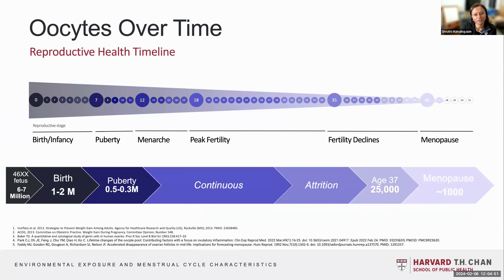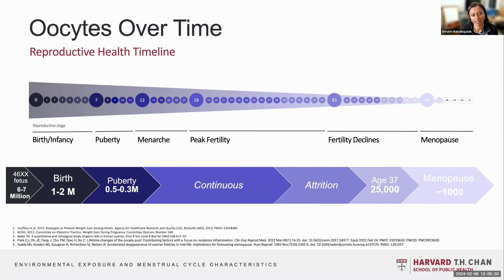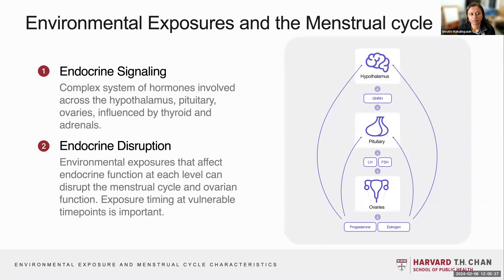In terms of what this looks like for one's oocytes over time, this shows how many oocytes exist. We have a peak number of oocytes in mid-gestation in a female sex at birth infant of about six to seven million, about one to two million at birth, a half a million at puberty, with a continuous attrition to about 25,000 at age 37 and about a thousand around the time of menopause. One of my areas of interest has been understanding different environmental exposures and the menstrual cycle, which is regulated by reproductive hormones.